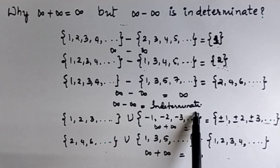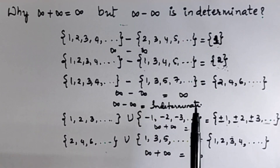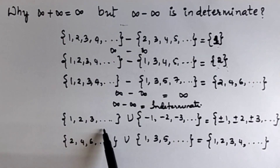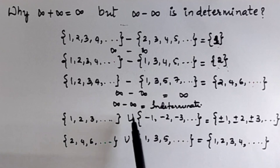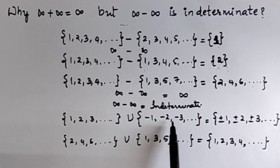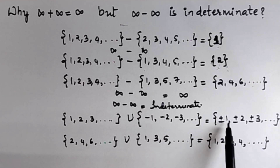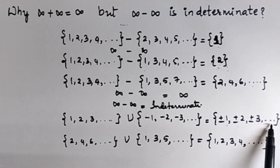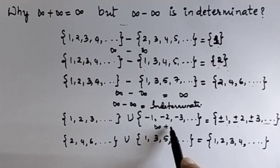Hence, we write indeterminate because there is no particular value. In the case of infinity plus infinity, consider the set of all natural numbers. Plus means I will take the union operation — I will add the set of all negative integers. Then you will get the set of plus or minus 1, plus or minus 2, plus or minus 3. This is an infinite set. So, infinity plus infinity gives you infinity.